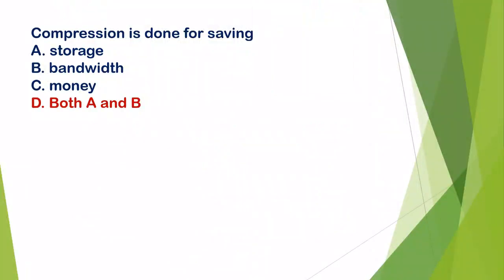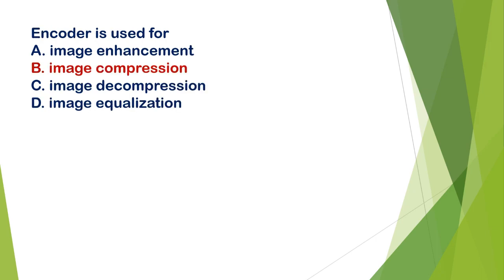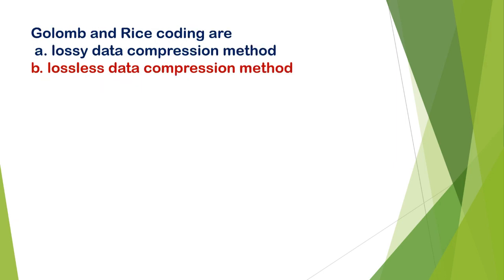The first question: compression is done for A) saving storage, B) bandwidth, C) money, D) both A and B. The correct answer is D, both A and B — meaning compression is used for both storage and bandwidth. Second question: encoder is used for A) image enhancement, B) image compression, C) image decompression, D) image equalization. The correct answer is B, image compression.